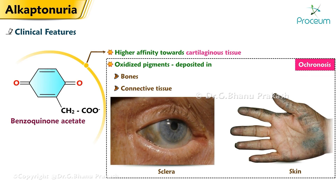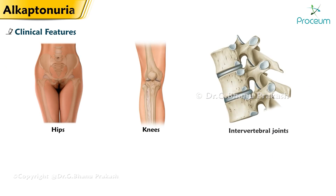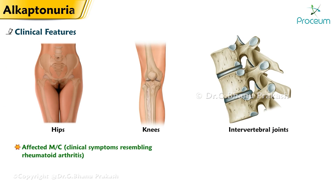Oxidized pigments are deposited in bones, connective tissue, sclera, skin, and elsewhere — a condition called ochronosis. The slate-blue, gray, or black discoloration of the sclera and ear cartilage is indicative of widespread staining of body tissues, particularly cartilage. The hips, knees, and intervertebral joints are affected most commonly, showing clinical symptoms resembling rheumatoid arthritis.